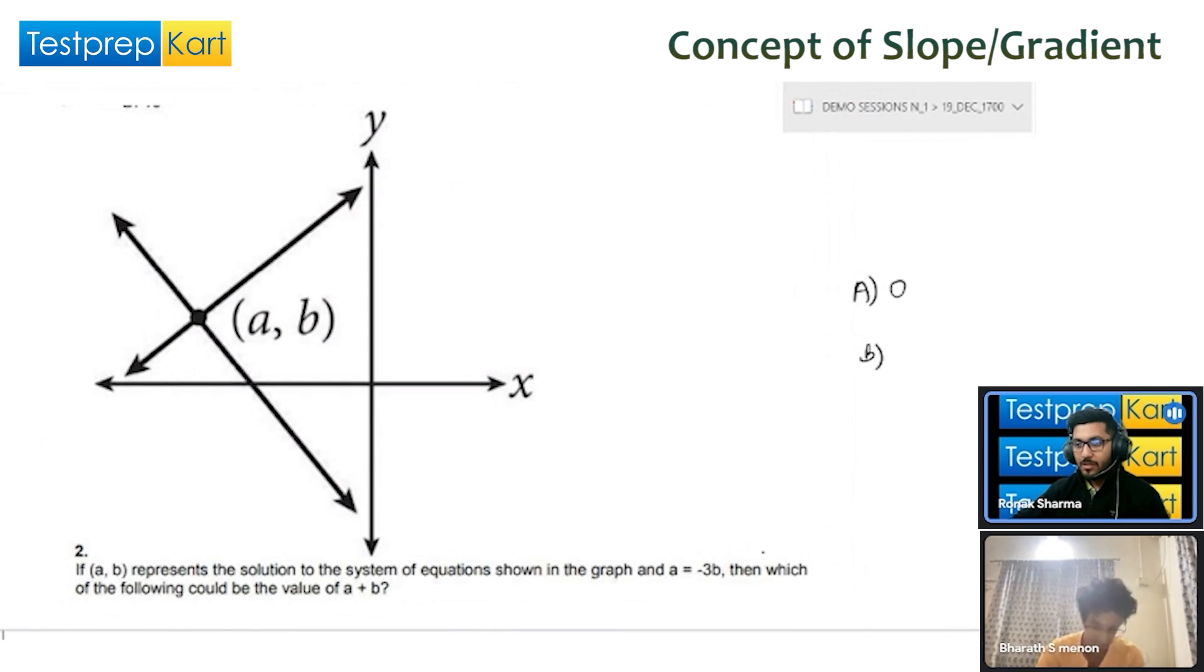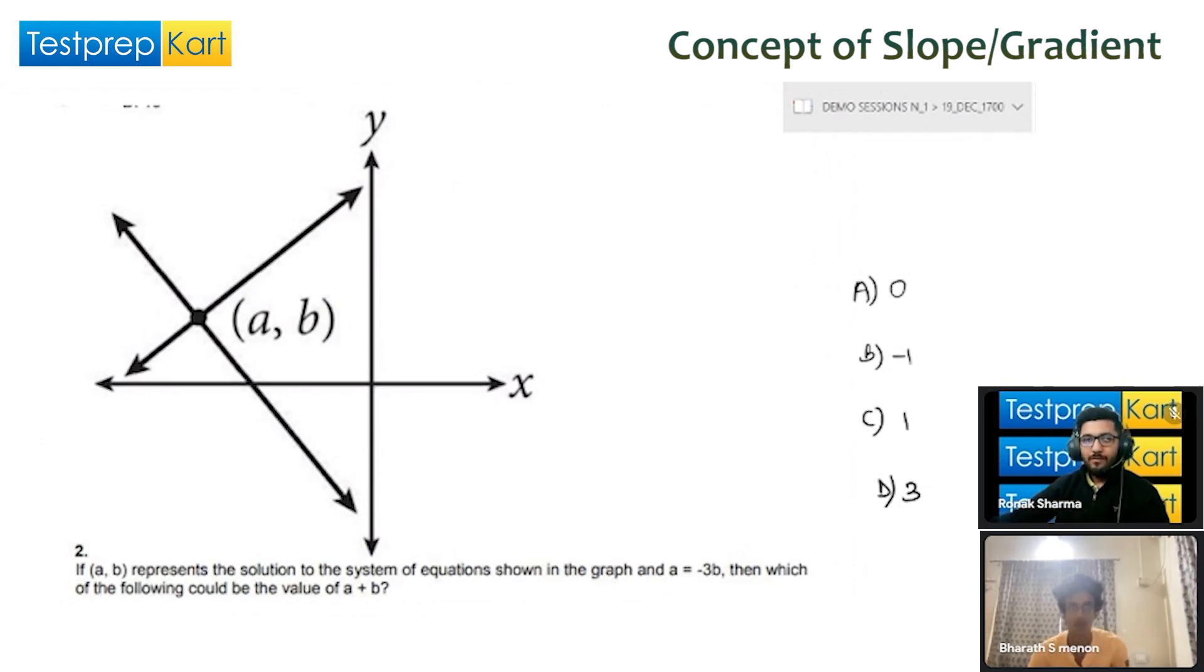Let's say zero, minus one, one, and three. Try this question - I'm giving you two and a half minutes. I don't have any points on any of the lines and nothing related to the slope of any of the lines.